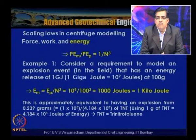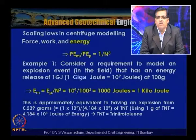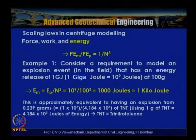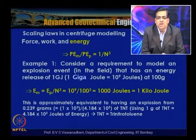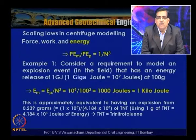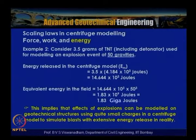1 kilojoule is approximately equivalent to an explosion of 0.239 grams of TNT (trinitrotoluene). Since 1 gram of TNT releases 4.184 × 10³ joules, we calculate 1 × 10³ / (4.184 × 10³) = 0.239 grams of TNT. If this is ignited at 100 gravities, the equivalent energy released equals 1 gigajoule in the field.